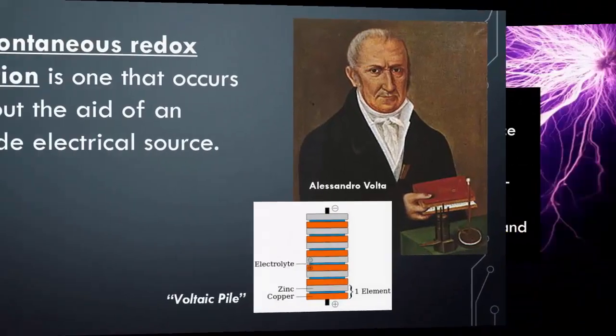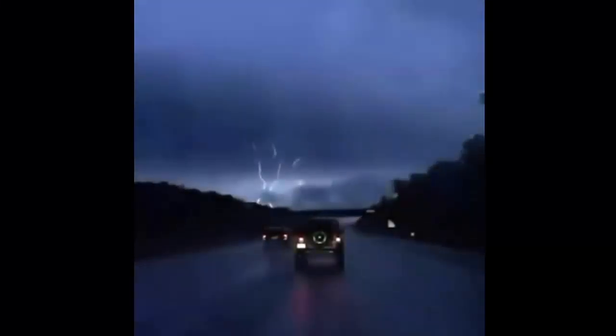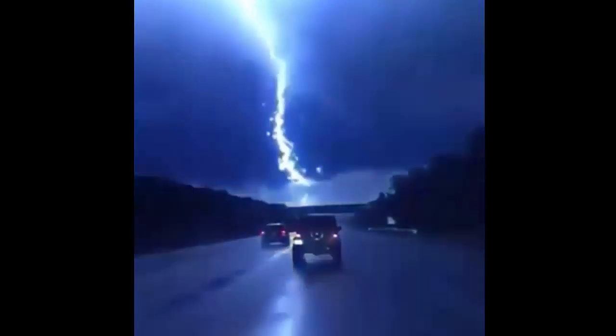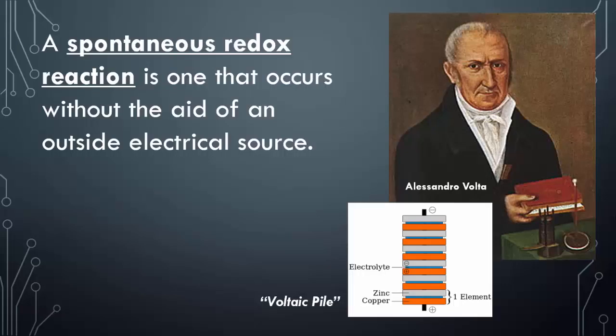That's why you never hold a metal umbrella — because it's going to conduct that electrical charge because of the sea of mobile valence electrons.